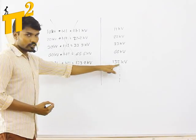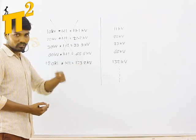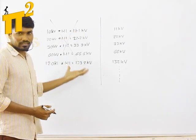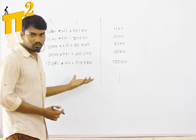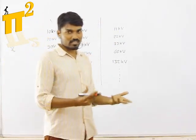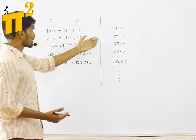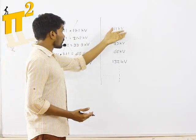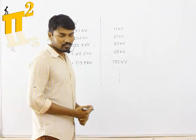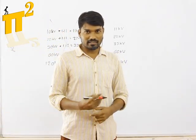Let me prove it with another example. Take 120 kV: 120 kV multiplied by 1.11 is not 132 — it is 133.2 kV. So basically this is not the right logic. I don't know who created this kind of nonsense, but it is wrong.